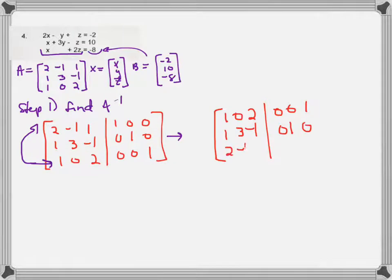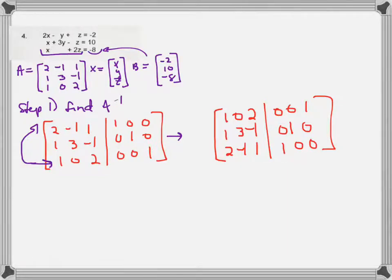We always work left to right, column by column, so we don't have to undo work. Starting in the far left column, I want a 1 in the top corner. There are already 1s in that column, so I'll swap row 1 and row 3. Now row 1 is 1, 0, 2 | 0, 0, 1 and row 3 is the old row 1: 2, negative 1, 1 | 1, 0, 0. I'll label the rows A, B, and C to follow the arithmetic.